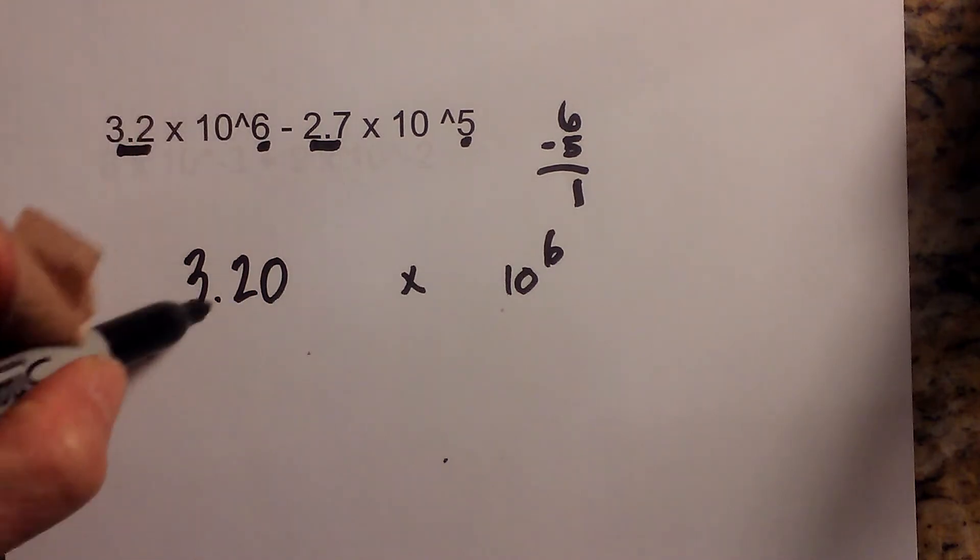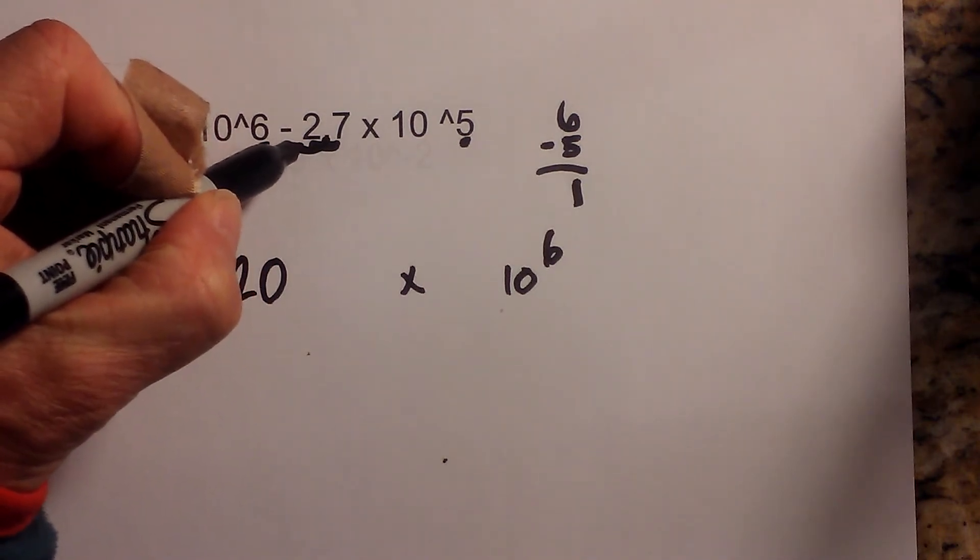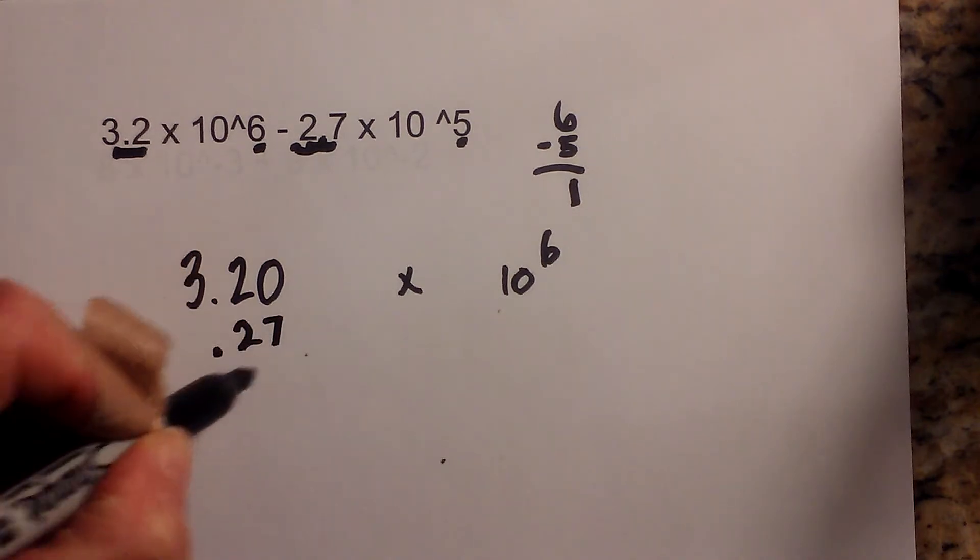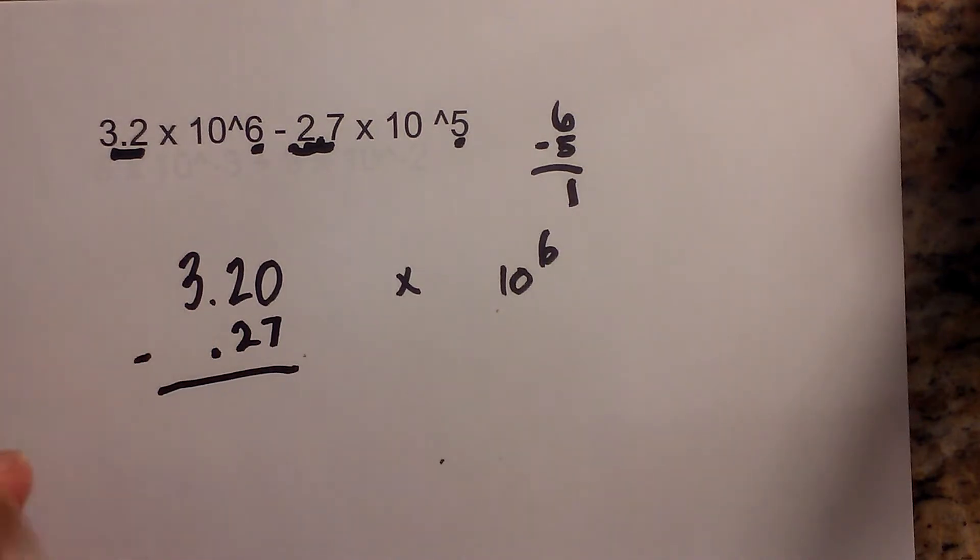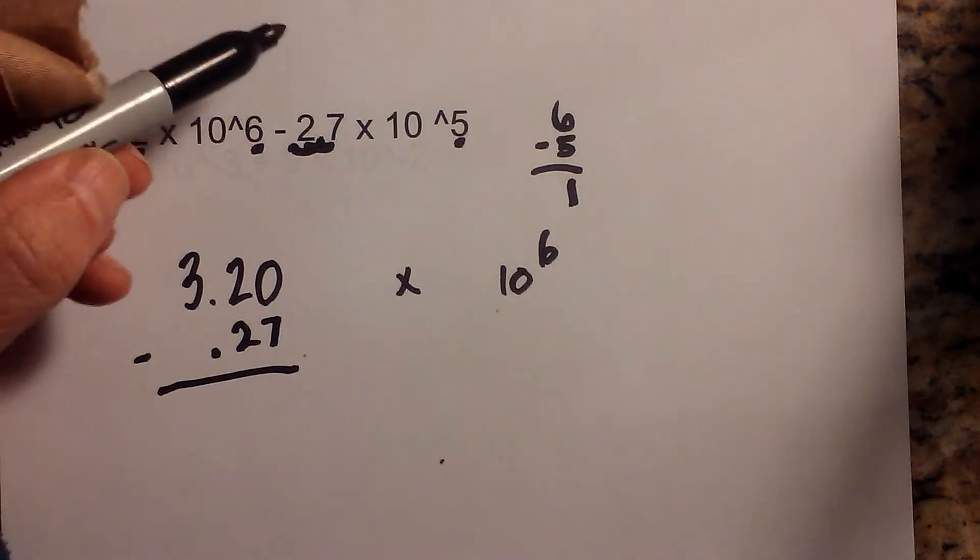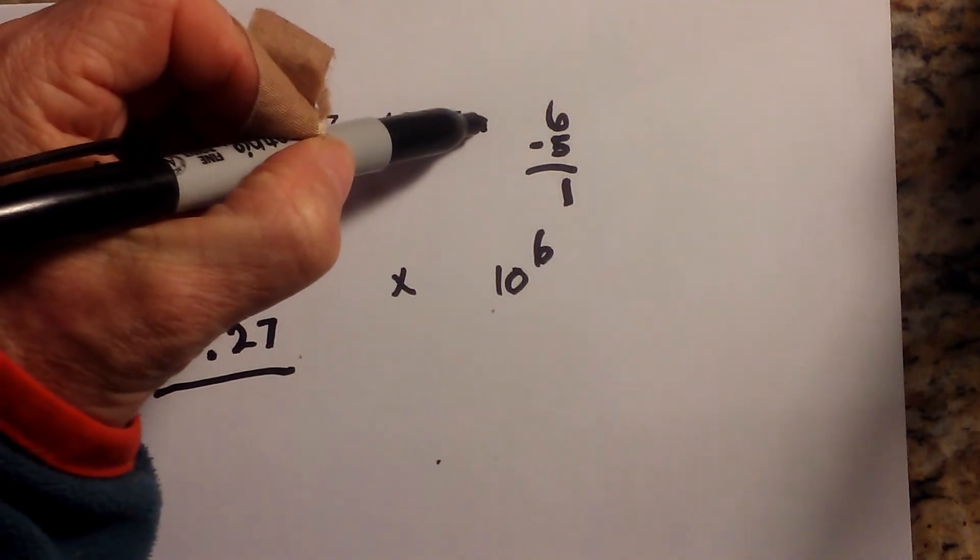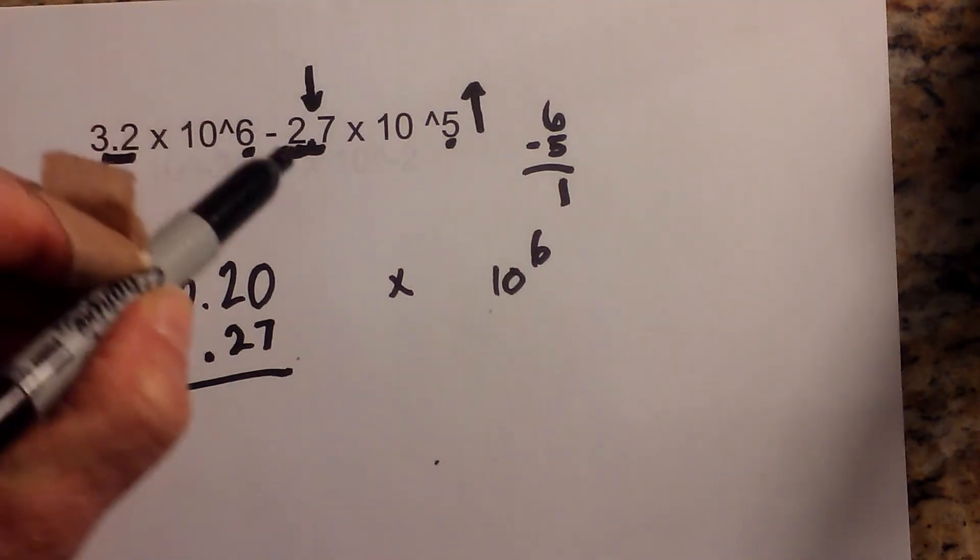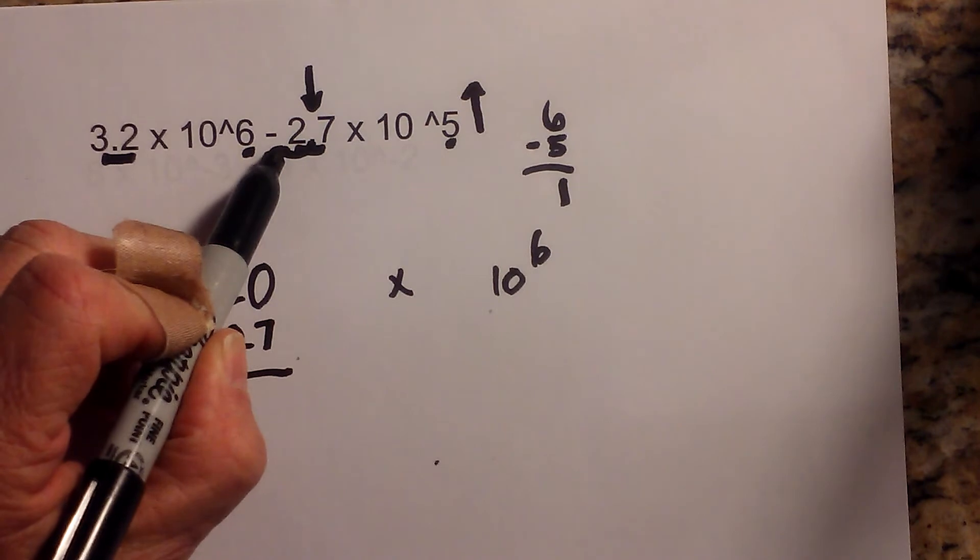Okay, because there is an inverse relationship. In order for the exponent to go up, the number or the coefficient must get smaller. And moving the decimal to the left makes 2.7 a smaller number.